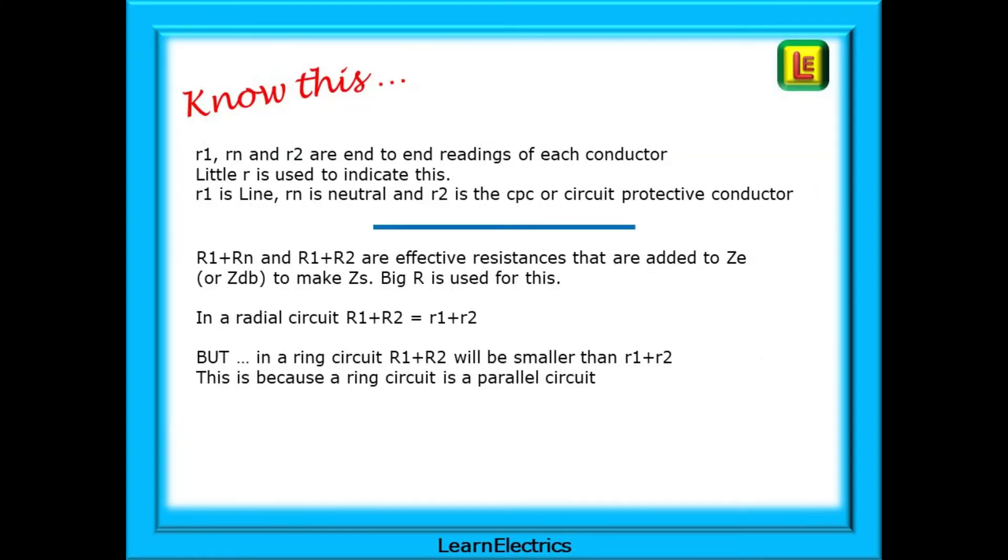To begin with, you must know this. Little R1, little Rn and little R2 are the end-to-end readings of each conductor. Little R is used to indicate this. This is important, it differentiates between the different test results. Little R1 is line, little Rn is neutral and little R2 is the CPC.